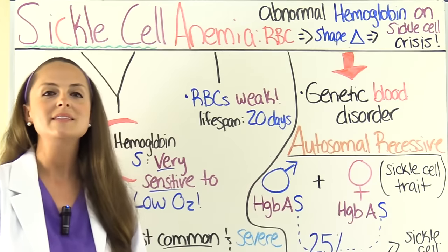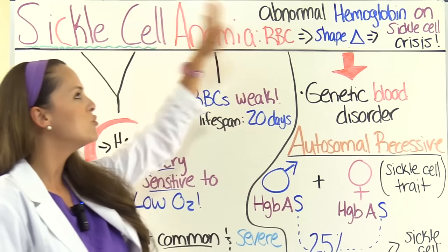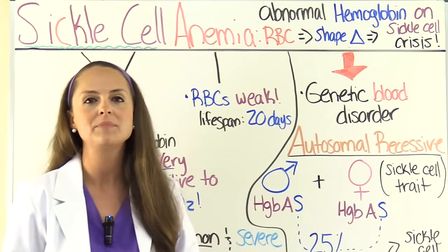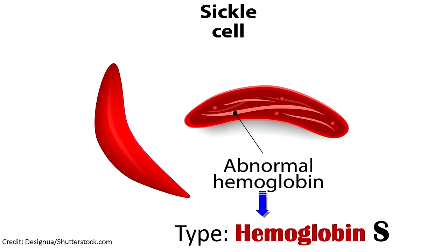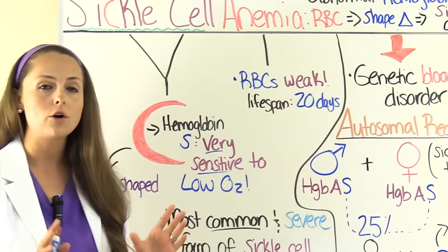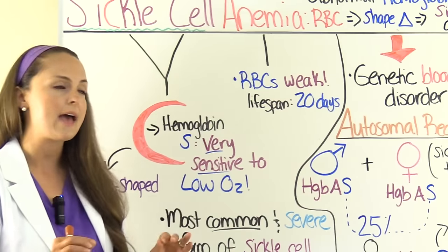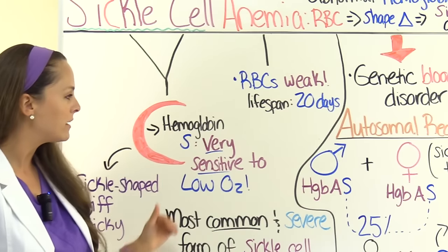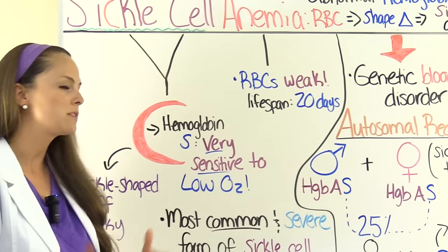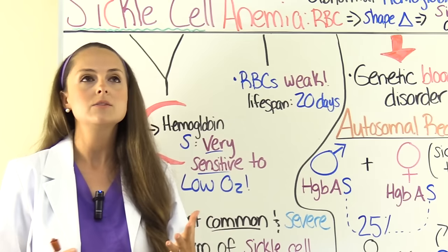What is sickle cell anemia? This is where a patient has abnormal hemoglobin on their red blood cell. The type of hemoglobin we're talking about is hemoglobin S. The normal type of hemoglobin is hemoglobin A. Patients who have hemoglobin A don't have this condition — only the ones who have hemoglobin S. Hemoglobin S is very sensitive to low amounts of oxygen in the body.